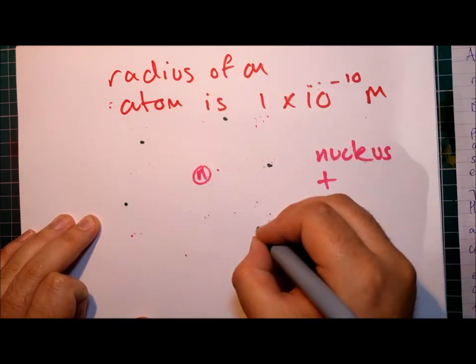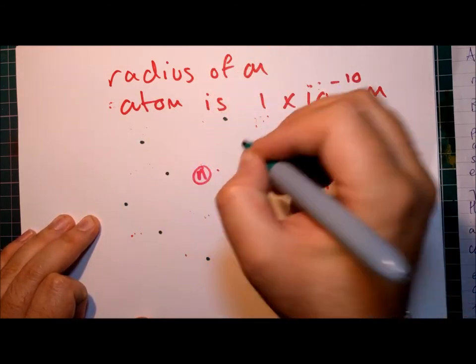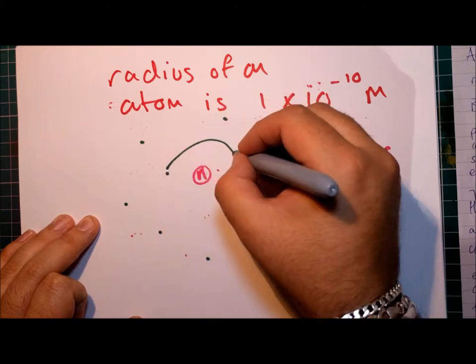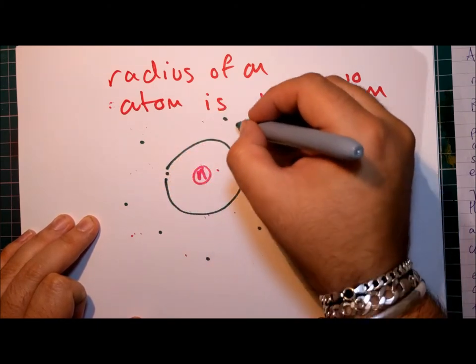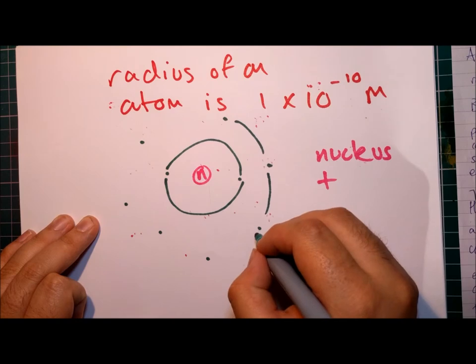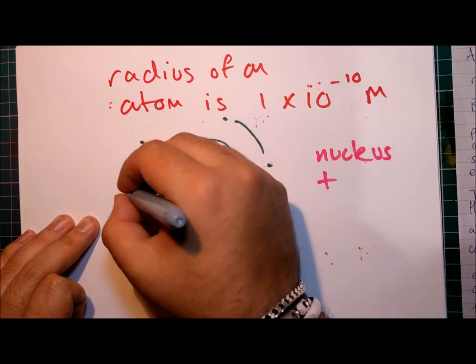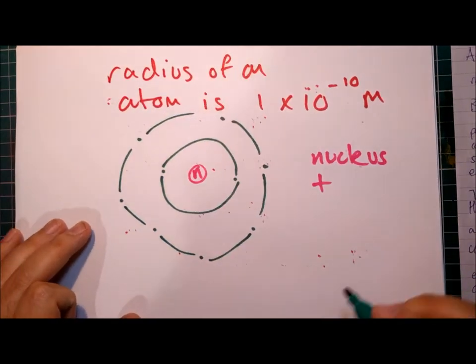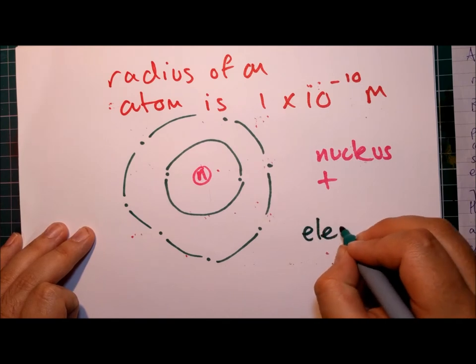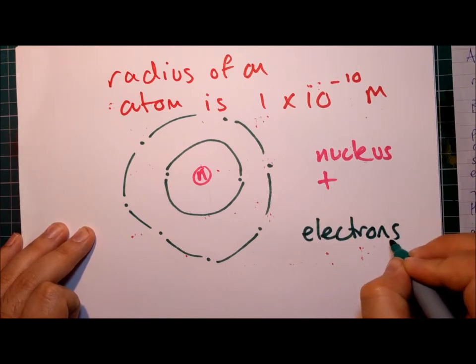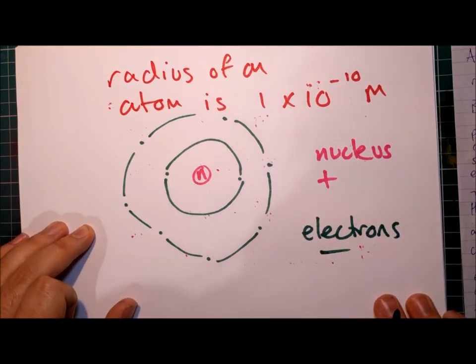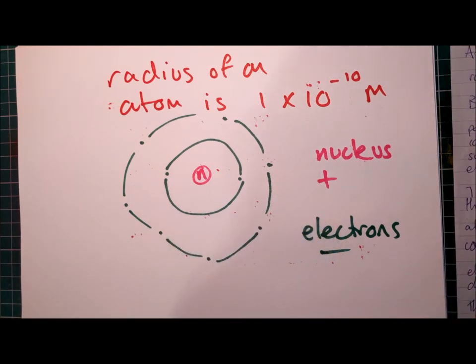So I put a few dots here around the outside. And those electrons are in something called shells. So here's my badly drawn shells. So then you've got electrons around the outside, and these are negative. Negatively charged. So positively charged nucleus, negatively charged electrons.